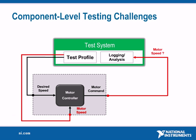First, we ultimately want to test the effect of our embedded control algorithm on our system. In this approach, we're actually monitoring the output of our control device, not its effect on the system. We're providing the system response as the stimulus to our unit under test. If we make a change to the algorithm and run the test again, the motor speed stimulus profile is invalid because it does not account for the change in system behavior that will result from the new algorithm.